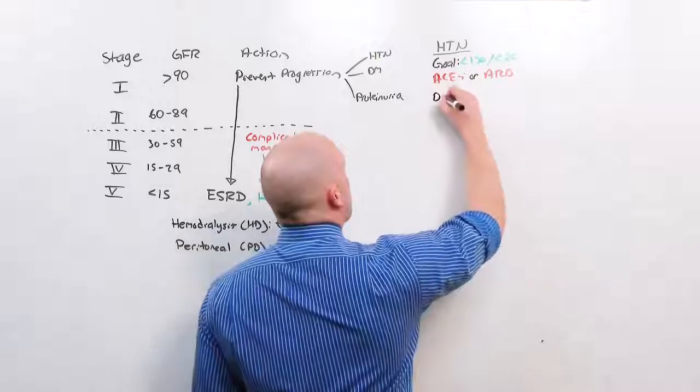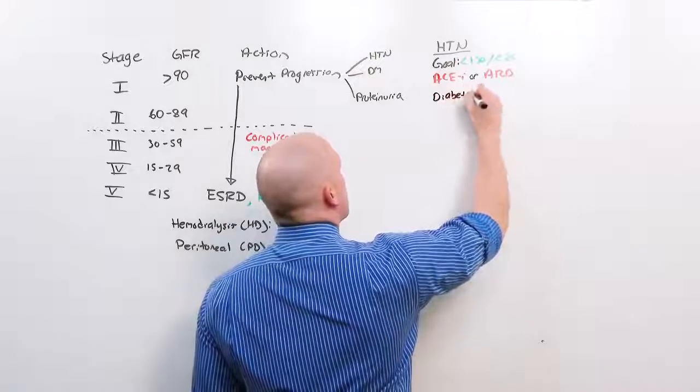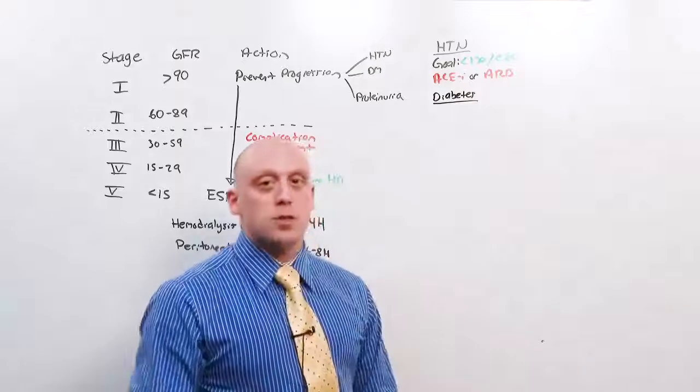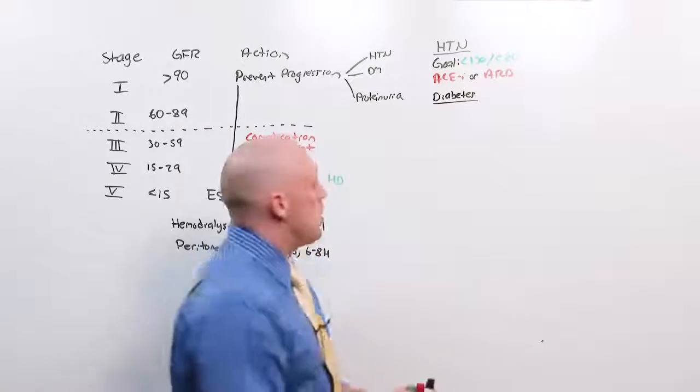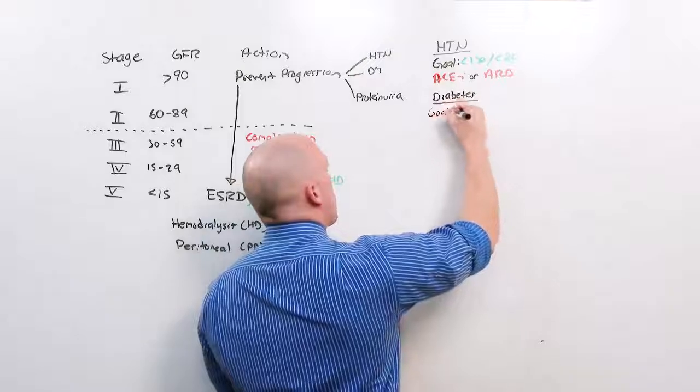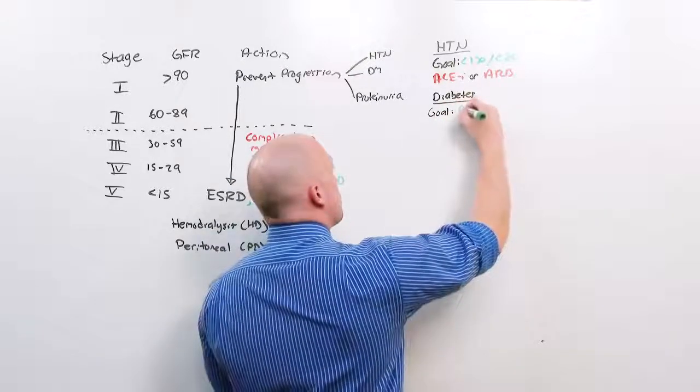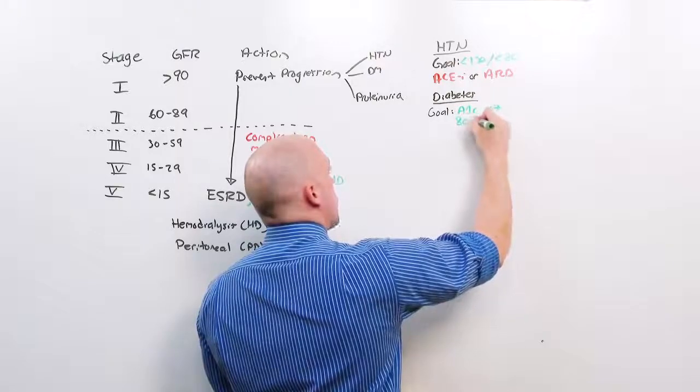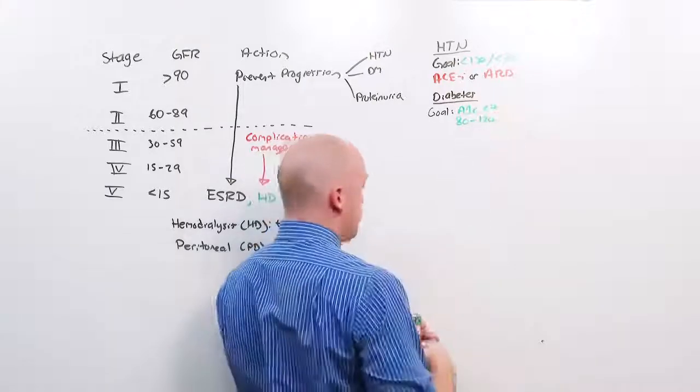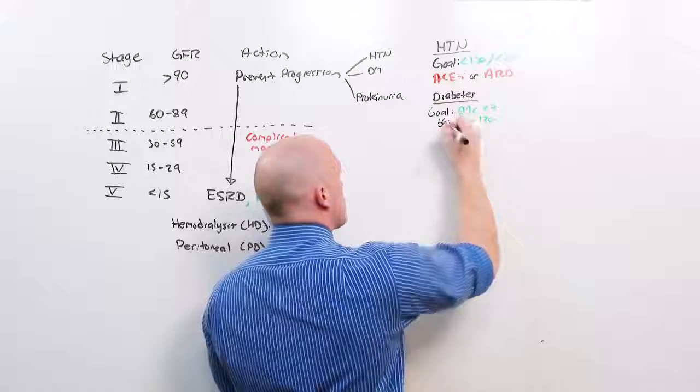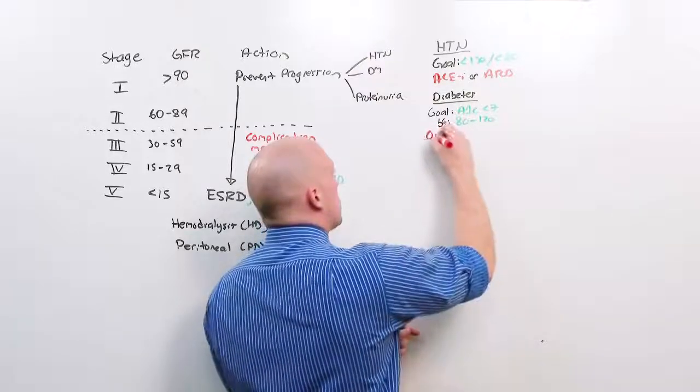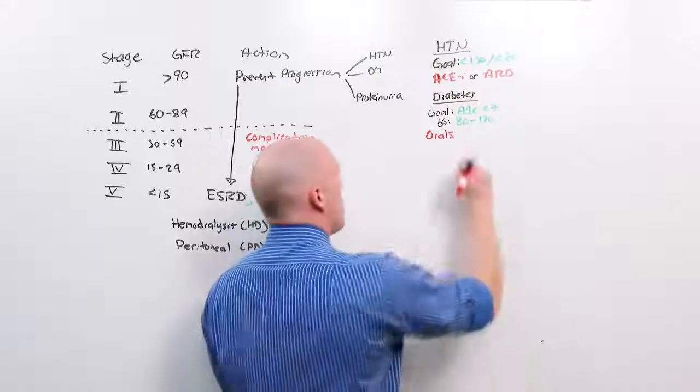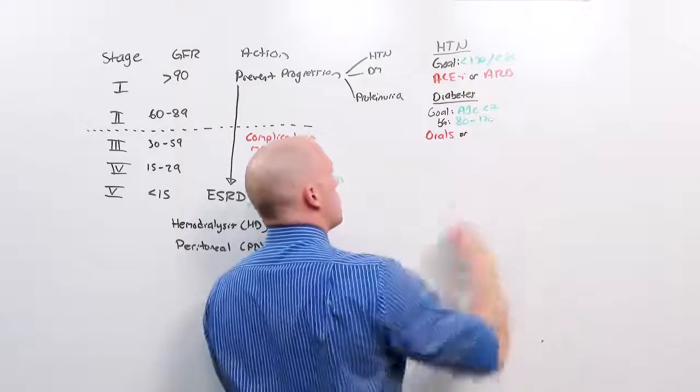Diabetes is easy. Because the management of diabetes in CKD is no different than the management of diabetes in general. Your goal is to have an A1C less than 7. Generally a blood glucose of 80 to 120. And you can do that with any oral medications other than metformin. And ultimately, you can use insulin.